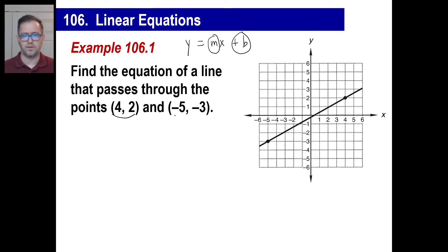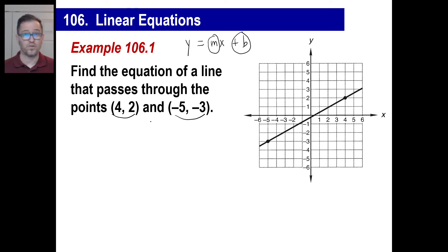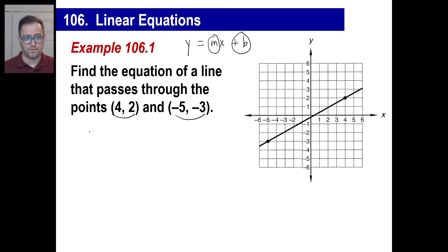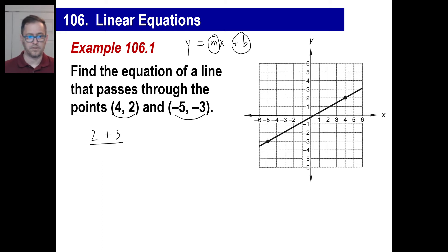We'll first use the slope formula to find the slope. We figured out a way to find slope using two points: you take the Y's and subtract them, put it on top; you take the X's and subtract those, put them on bottom. So the difference of the Y's: two minus negative three is the same as two plus three on top. Since I started with two on top, I'll start with four on the bottom: four minus negative five, which is four plus five. So the slope is five over nine. We're halfway there.